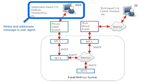Jack will begin by writing and addressing the email using what is called a user agent. In Jack's case, his user agent is an email application that lives on his own computer. Examples of such applications include Microsoft Outlook or Mozilla's open source Thunderbird email application. These applications are compatible with private email systems like the one that Jack uses.